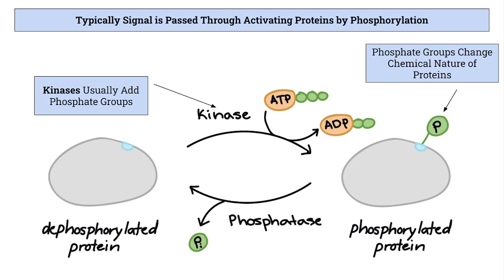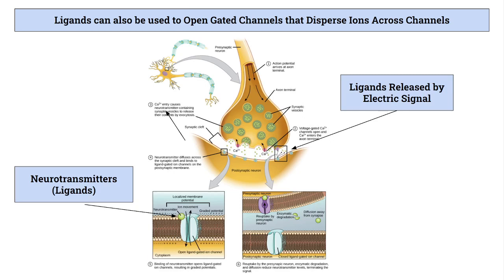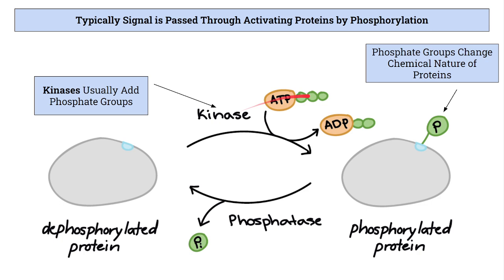Typically the signal isn't just one protein traveling to the response. Just like a relay race, the signal is passed from protein to molecule to other molecules, continually passed until the response finally occurs. As the signal is passed, it's typically done through phosphorylation — when a phosphate group is taken off one molecule and put onto another. Kinases are enzymes that add phosphate groups. A dephosphorylated protein is low in energy, like that GDP we discussed. A kinase enzyme takes a phosphate group from ATP and attaches it to the dephosphorylated protein, changing its chemical nature and allowing it to continue the relay.